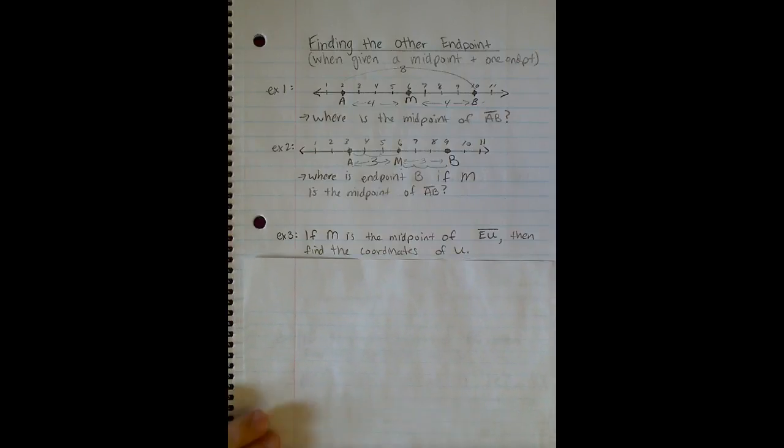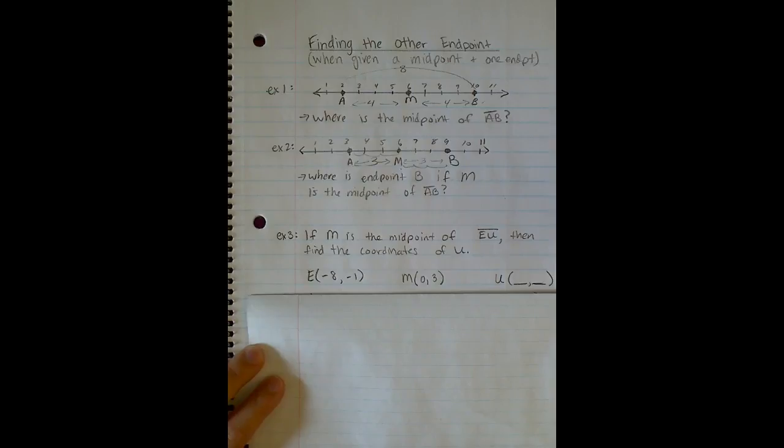If M is the midpoint of EU, then find the coordinates of U. The coordinates for E and M are given, and we need to figure out where the point U would be located.